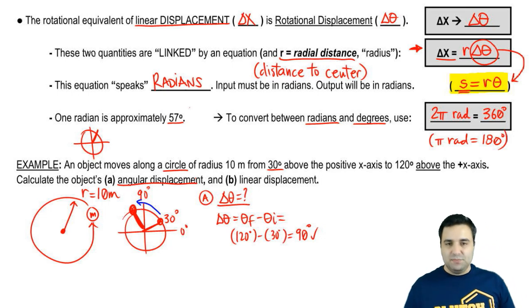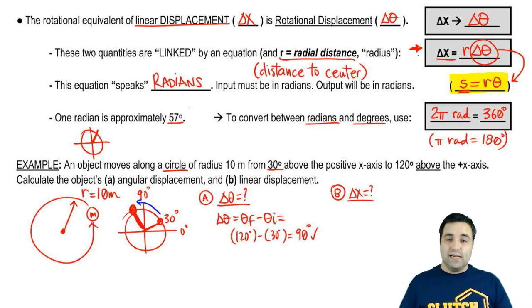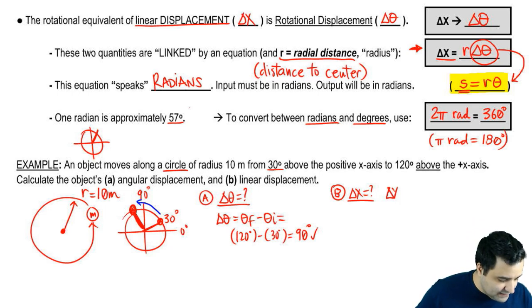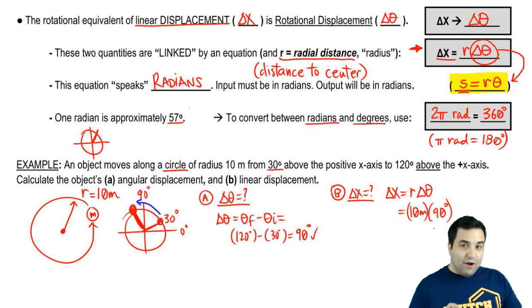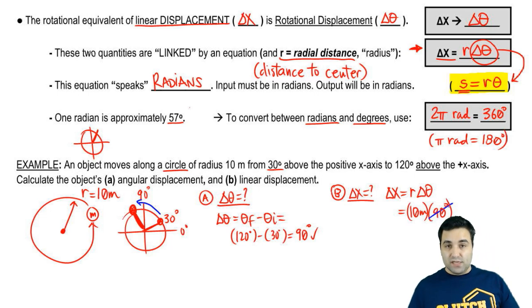And then for part B, it wants linear displacement. Linear displacement is delta x. And I just showed you how I can connect delta x to delta theta. So we're basically converting from one to the other. Delta x is r delta theta. I have r. r is 10 meters. And delta theta is 90 degrees. Now, here, I hope you're saying, no, it's not. This is wrong. And you're supposed to use radians. So I want you to actually write this out and then cross it out so you remember not to do this. It has to be in rad.